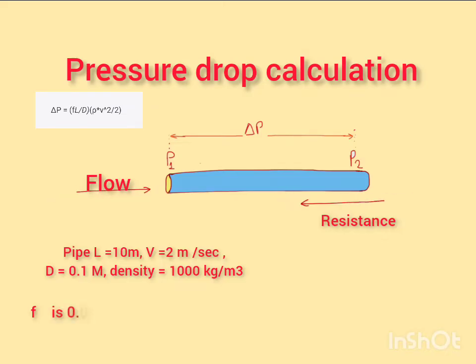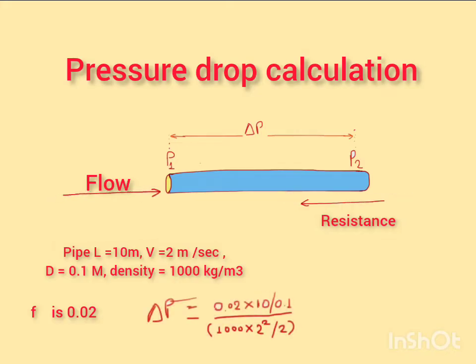Using the formula we just discussed, we can calculate the pressure drop as follows. Delta P equals 0.02 times 10 divided by 0.1 times 1000 times 2 squared divided by 2. Delta P equals 4000 pascals. So the pressure drop across the pipe in this example is 4000 pascals.